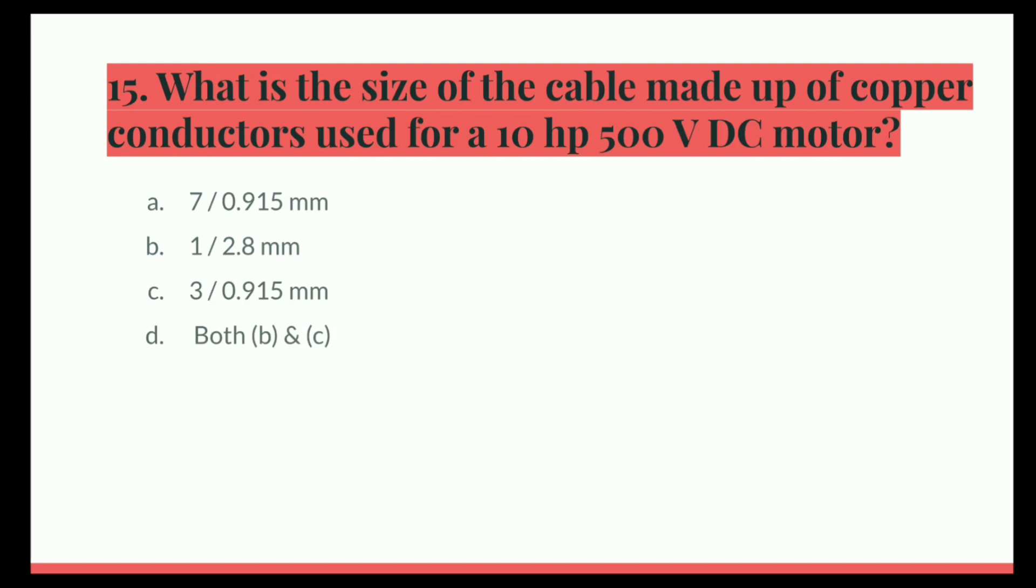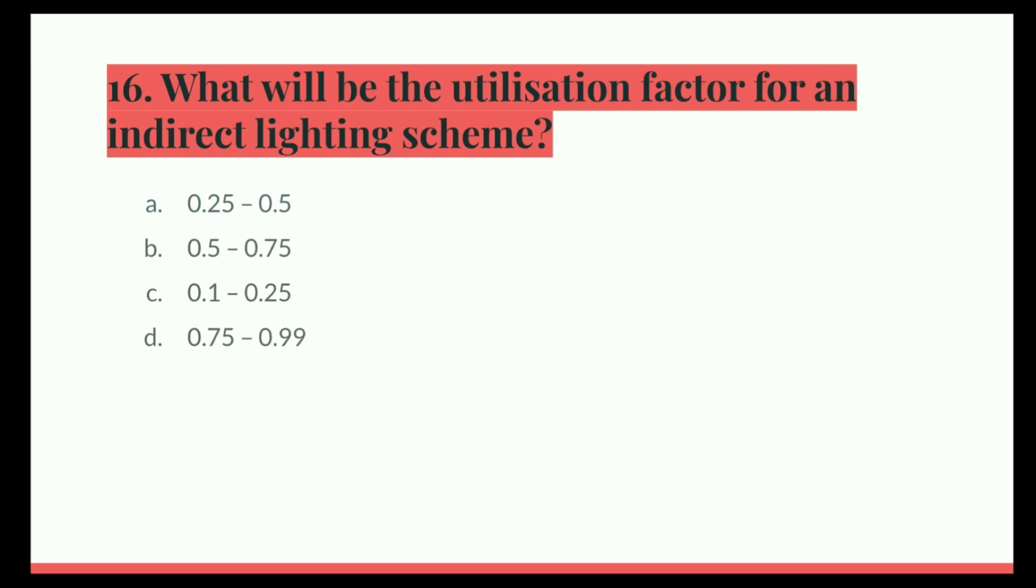Next question. What is the size of the cable made up of copper conductors used for a 10 or 8 horsepower 500 volt DC motor? Option A, 7 by 0.915 millimeter. B, 1 by 2.8 millimeter. C, 3 by 0.915 millimeter. D, both B and C. And the correct answer is 7 by 0.915 millimeter.